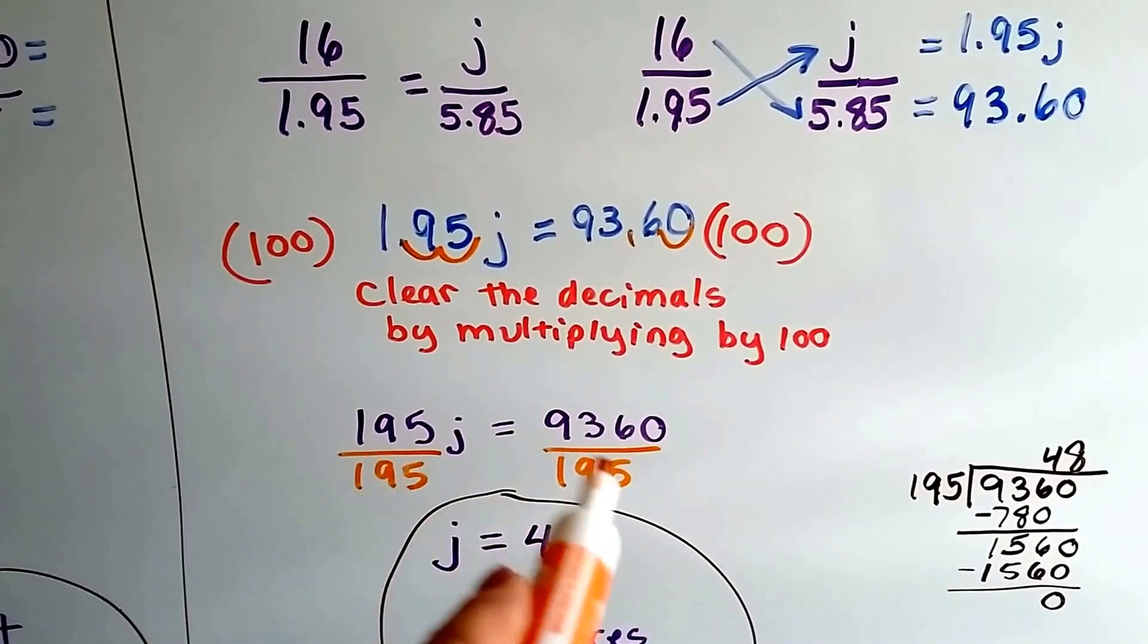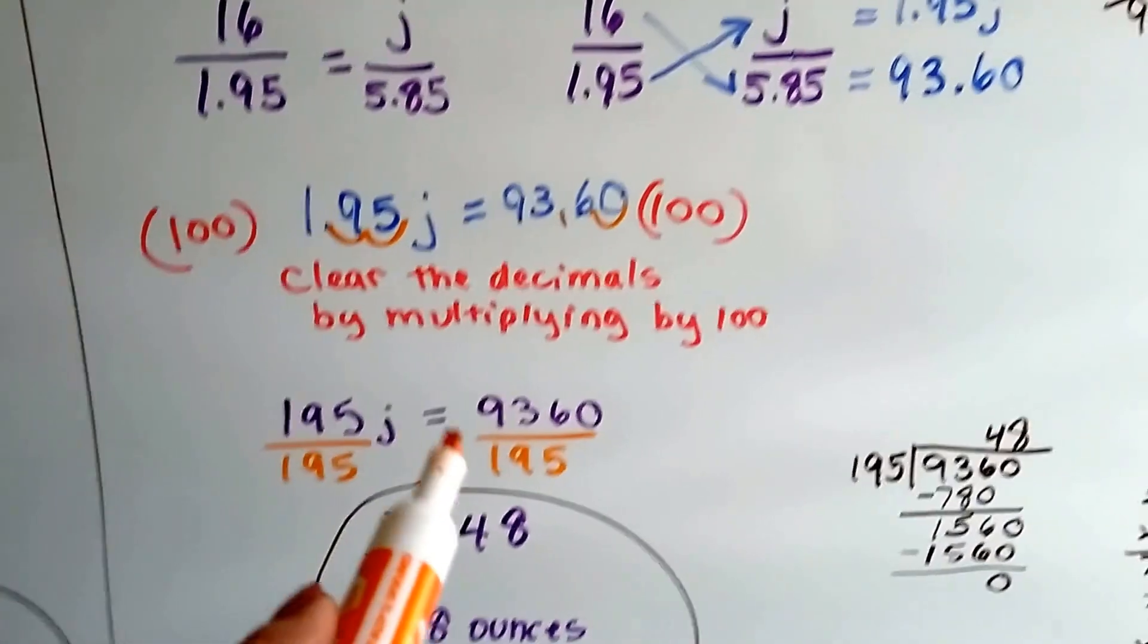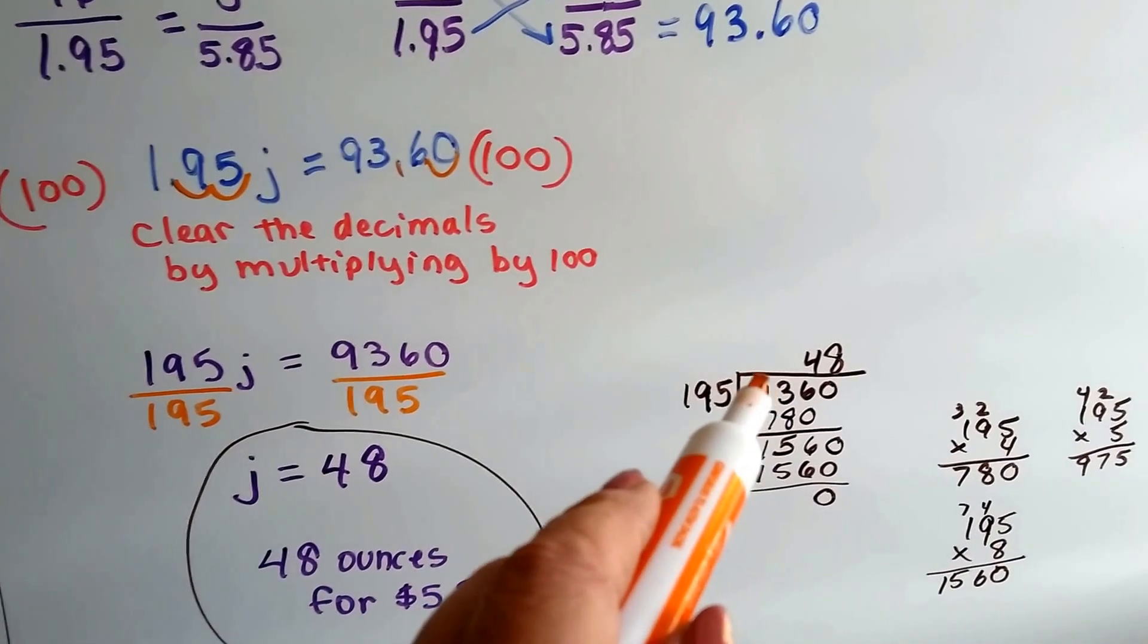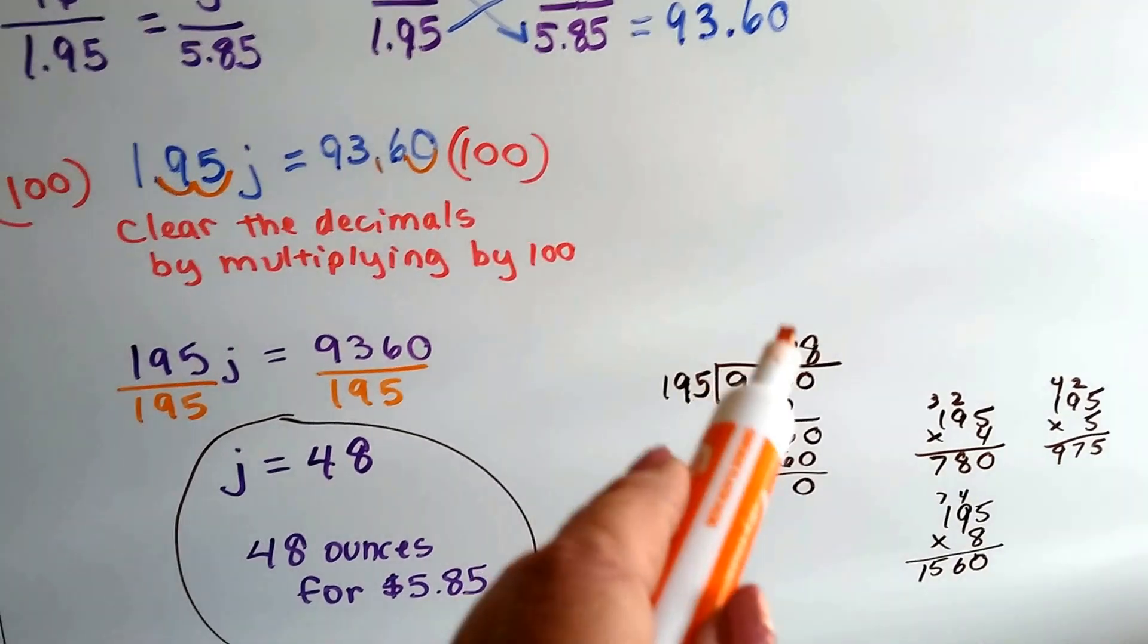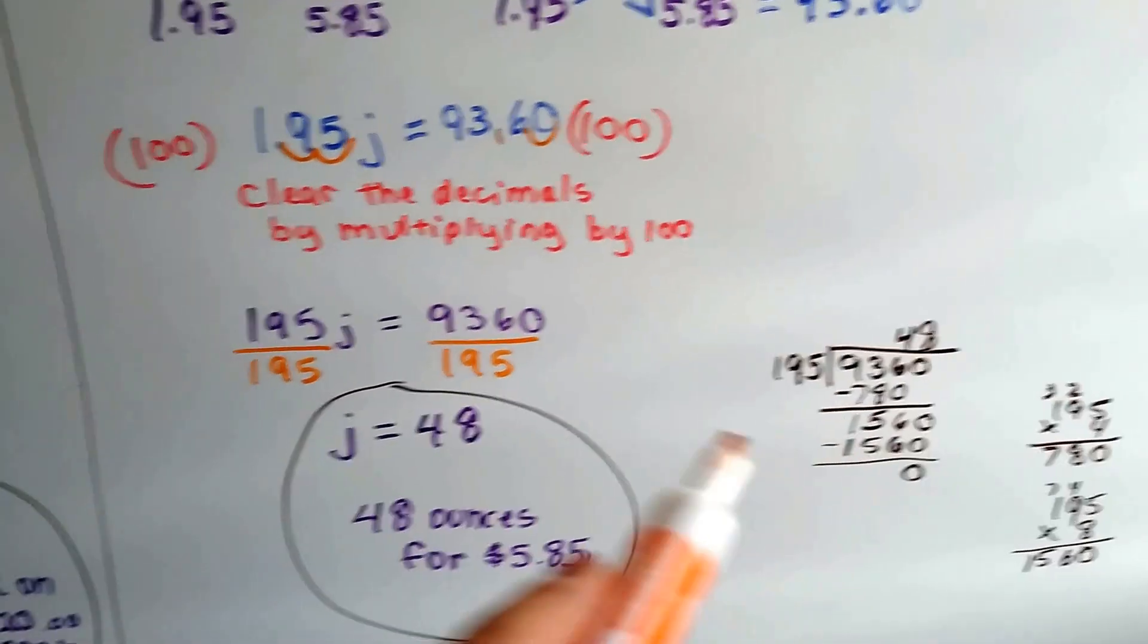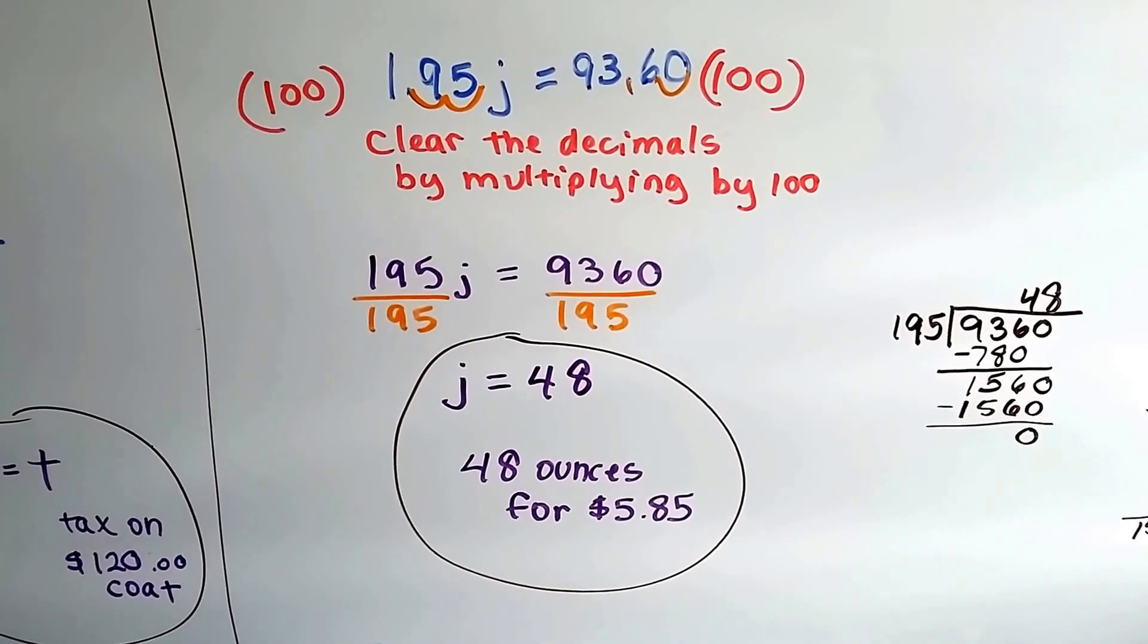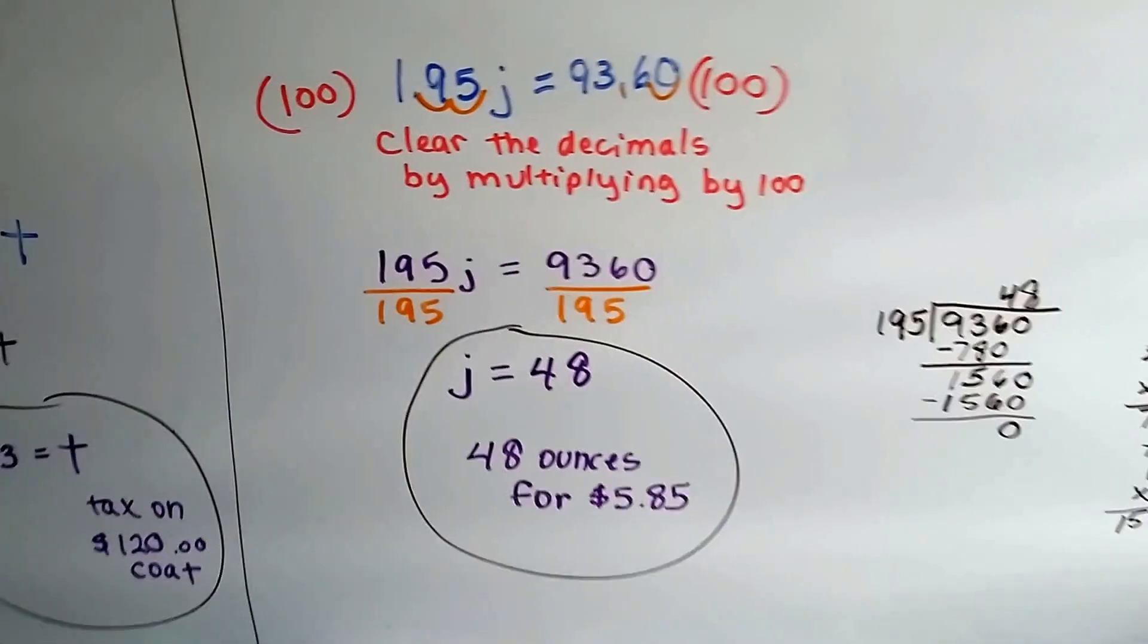We can divide both sides by the 195, by this coefficient. And we do a little long division on the side. How many times can 195 go into 9360? With a little multiplication, we find out it's 48 times. So we get a 48-ounce bottle of juice for that $5.85. So we know it's 48 ounces.